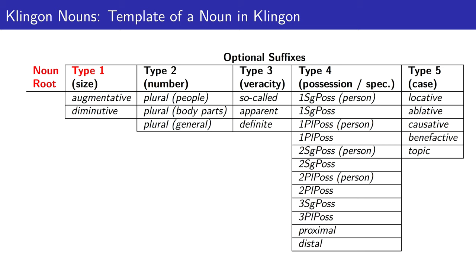If a noun has a type 1 suffix, the type 1 suffix will occur immediately after the noun root. If a noun has a type 2 suffix, it could occur immediately after the type 1 suffix if there is one; otherwise, the type 2 suffix would occur directly after the noun root.